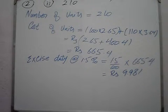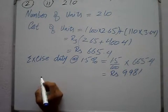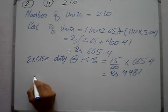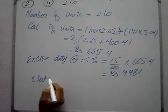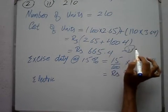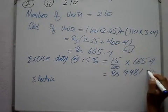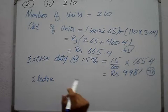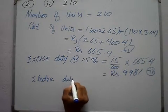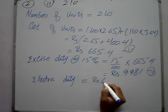Excise duty is done. After this, there is electricity duty — it is a constant rate. We name this: item 1 is cost of units, item 2 is electricity duty, item 3 is excise duty. Electricity duty is constant: RS 62.52.